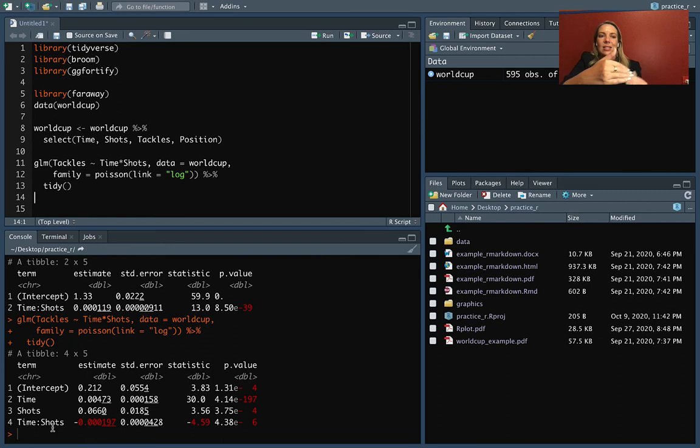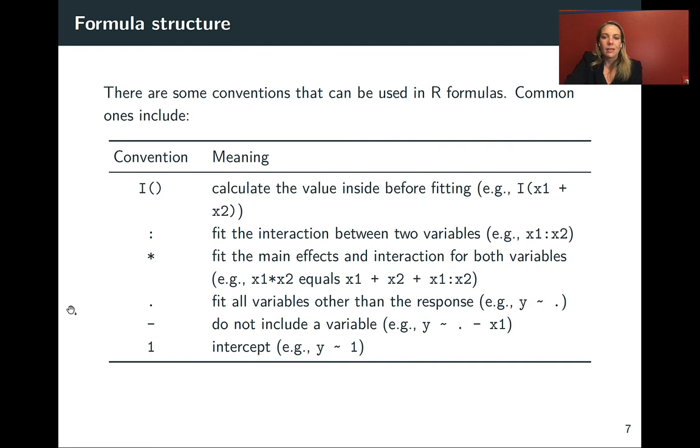Again, these interactions might be covered in a statistics course that you take, something like STAT 511 or STAT 512 or one of the regression courses here at CSU. If you wanted to fit all of the variables that are included in the data set except the response, you can do just a single dot and that will fit everything but this column we've already specified. If you wanted to fit everything but one, you could do a dot and a minus and then take out the one column you don't want to fit.